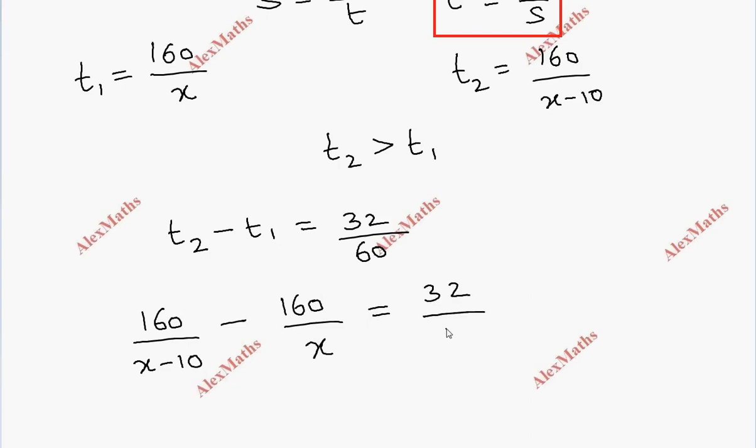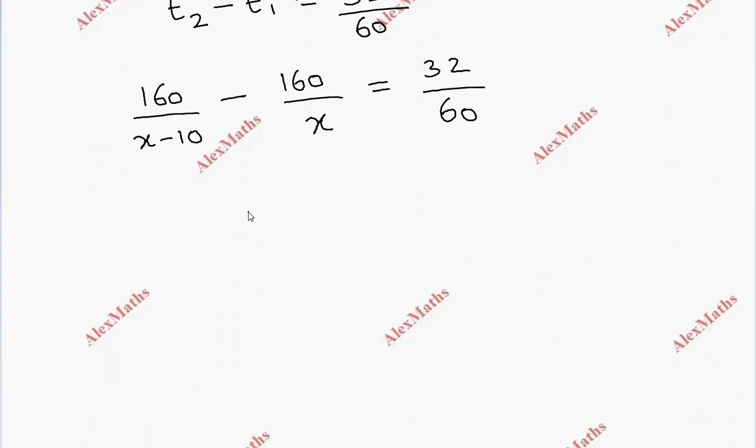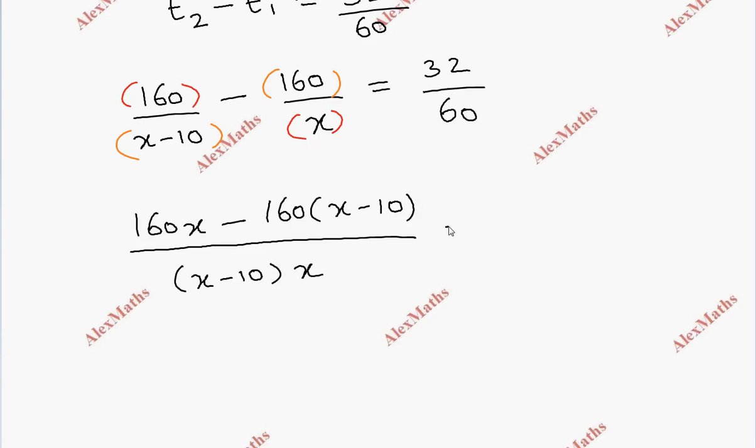Now I'm going to solve this. The LCM of the denominator is (x minus 10) times x. So 160x minus 160 times (x minus 10) over (x minus 10) times x.